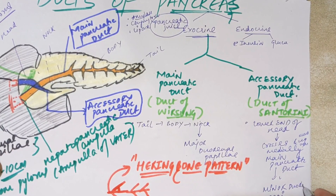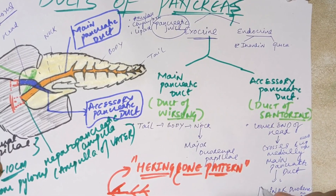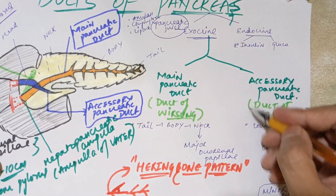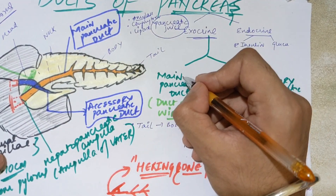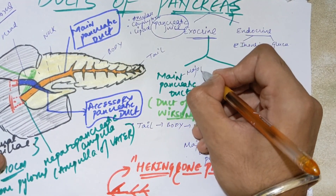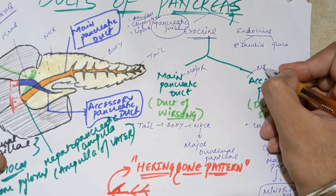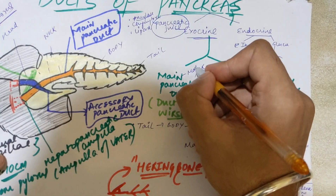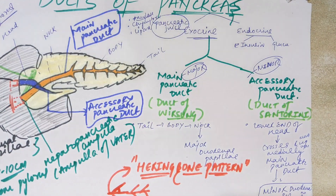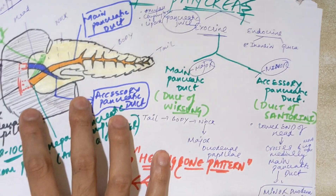To summarize the ducts: the main pancreatic duct drains into the major duodenal papilla, and the accessory pancreatic duct drains into the minor duodenal papilla. A helpful memory tip: accessory means assistant — smaller — so it drains into the minor papilla, while the main duct drains into the major papilla.